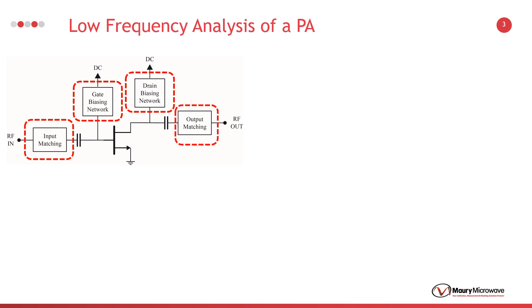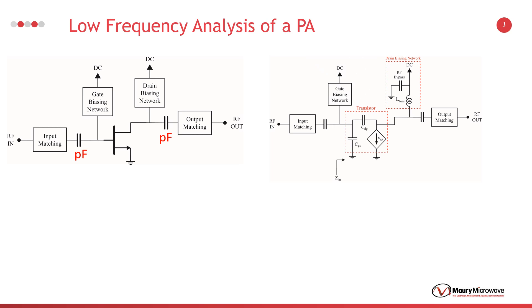Assume that this amplifier is for the gigahertz frequency range and the values of the DC blocking capacitors at the input and output matching networks are in the picofarads range. This means we can ignore the matching networks since we are analyzing the transistor in the low frequency region up to a few hundred megahertz. The RF bypass capacitors are ideal. Their capacitance values are infinite, essentially shorting the signals at the drain biasing point. The gate source capacitance has a very small value and may be ignored for low frequency analysis.